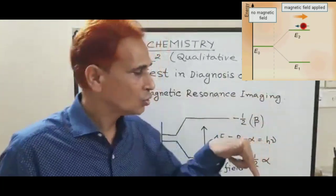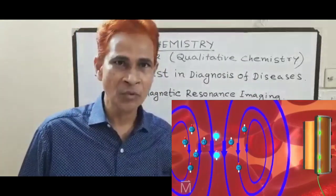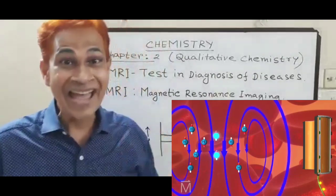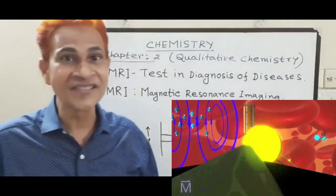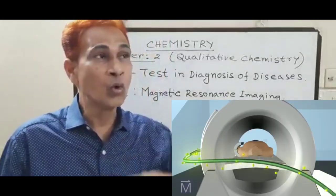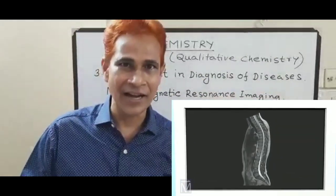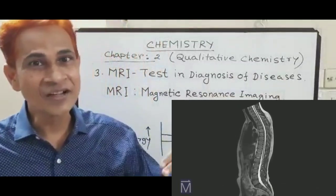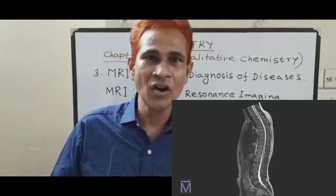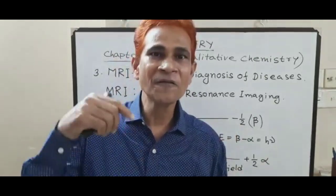Then they come back from higher energy level to lower energy level — that means a transition takes place, which is called nuclear magnetic resonance. A radio frequency signal is generated. This signal will be different in the affected area and unaffected area. This radio frequency signal is processed in a computer to create the image of different organs of the patient, and it is stored for future investigation.